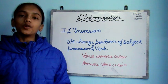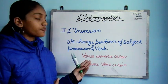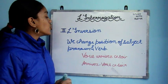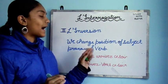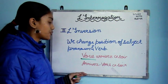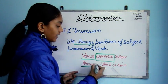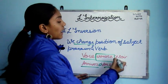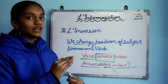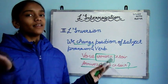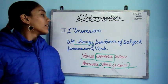Now the last form of interrogation is l'inversion. In inversion, we interchange the position of the subject pronoun and the verb. For example, 'vous arrivez hier soir' — here 'vous' is the subject pronoun and 'arrivez' is the verb. We interchange them and place a hyphen between them: 'arrivez-vous,' then the rest of the sentence follows as is, and we add a question mark at the end.